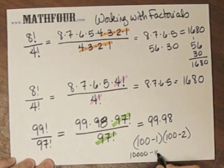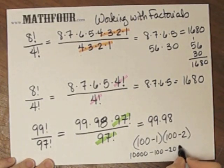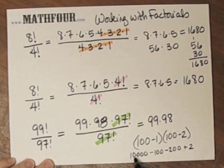Minus 100, minus 200, plus 2. So that's 10,000 minus 100 minus 200, which is 9,700.